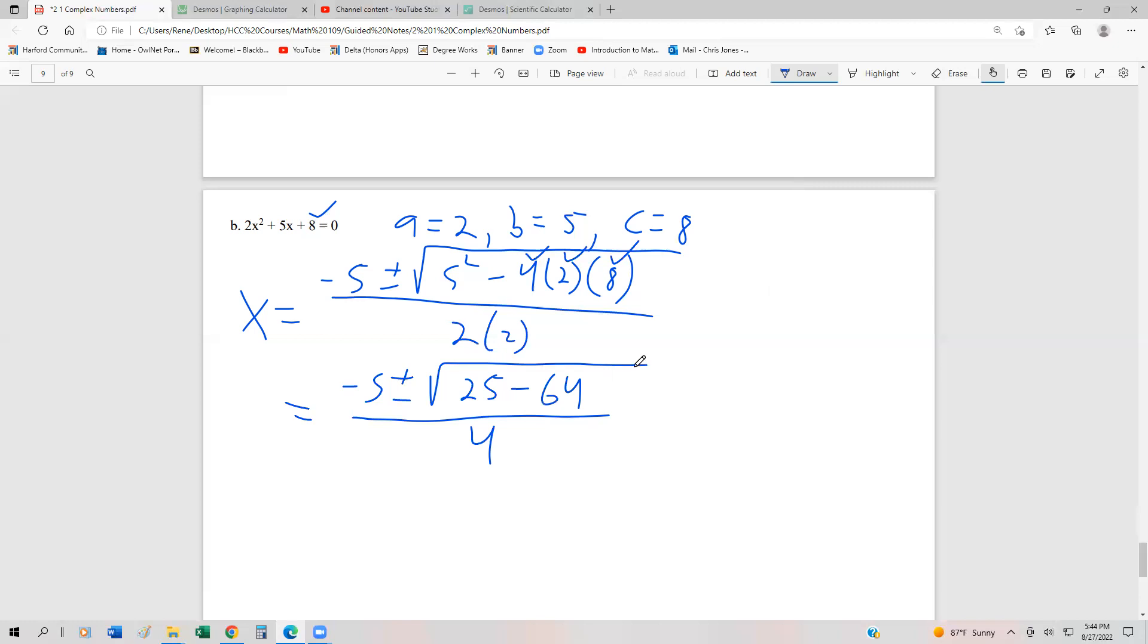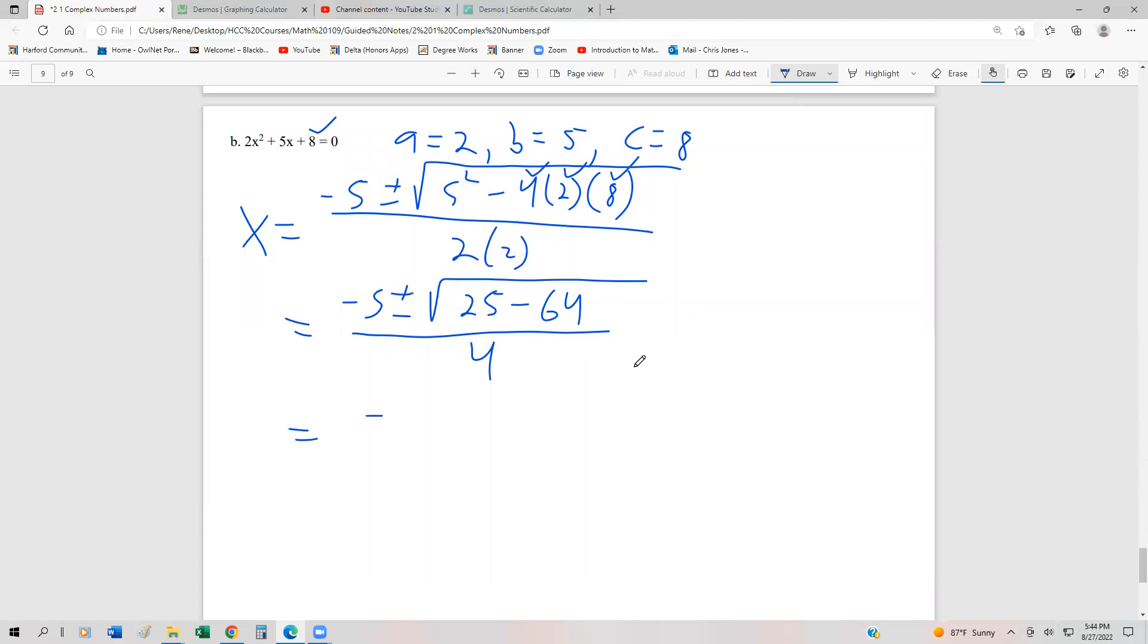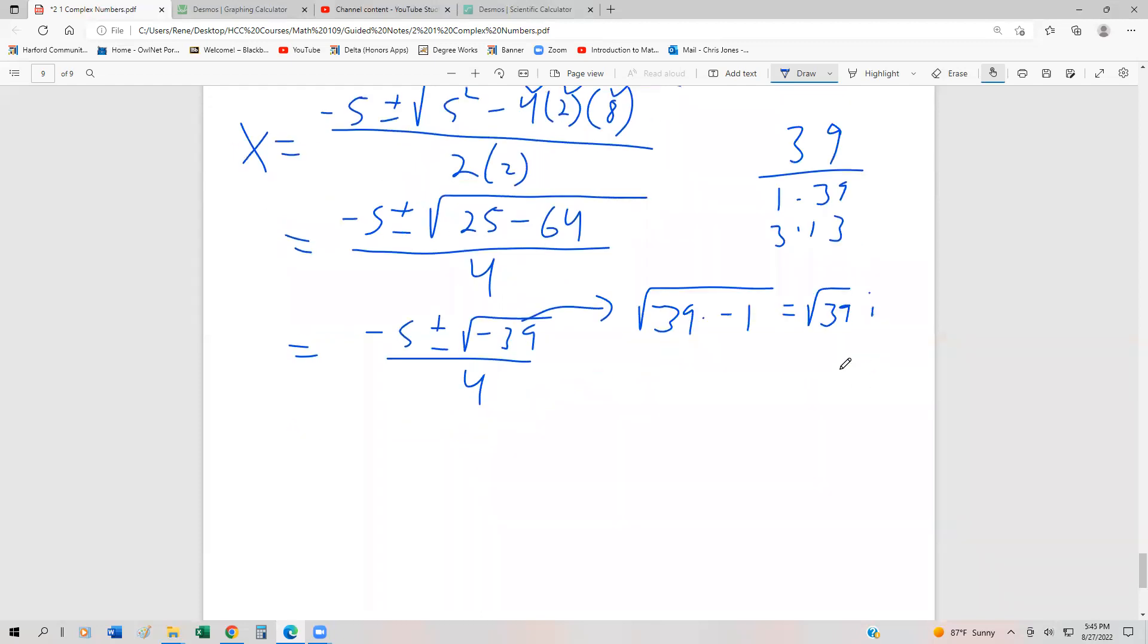25 minus 64 is going to give us a 39 negative. So negative 5 plus or minus the square root of negative 39 over 4. Nothing we can do with 39. The only numbers that multiply to be 39 are 1 times 39 and then 3 times 13. There's no perfect square factors within that. So we're kind of saddled with just going through and being able to simplify the negative 39. We could think of negative root 39 as 39 times negative 1, which is going to be root 39i.